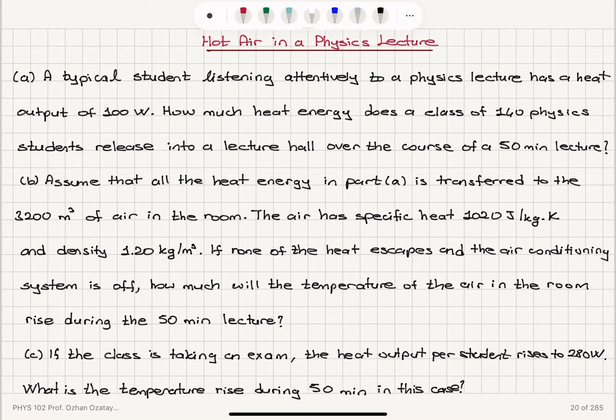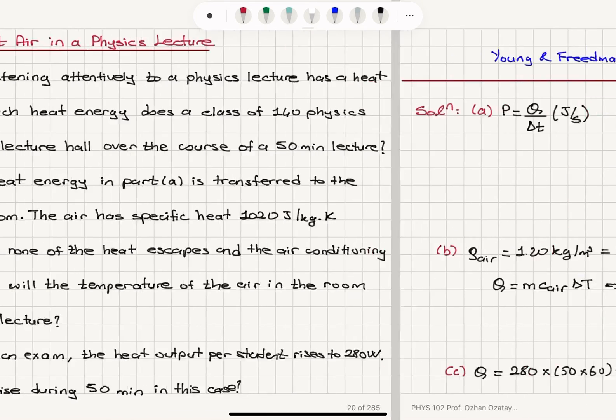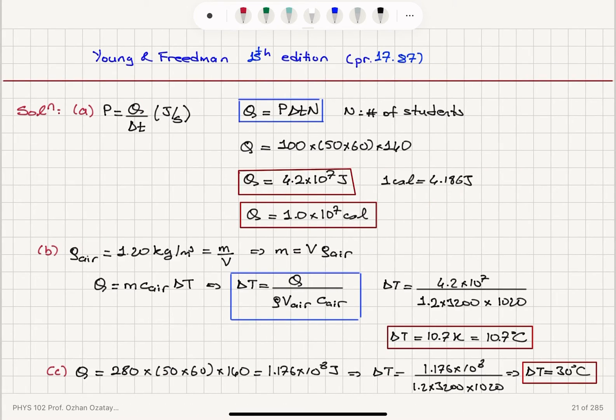The lecture time is 50 minutes. We can calculate the total heat provided by the students because the power is Q divided by delta T. 100 watts in joules per second multiplied by number of seconds, 50 minutes times 60 seconds, times number of students gives us total heat output of the students, which can be converted to calories.